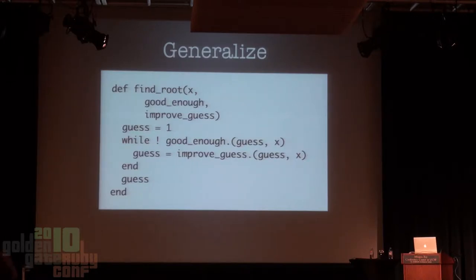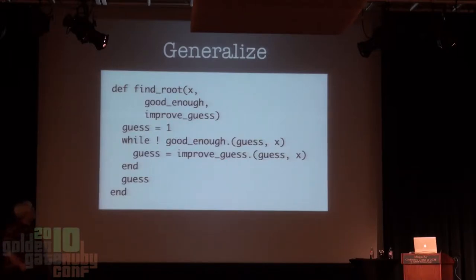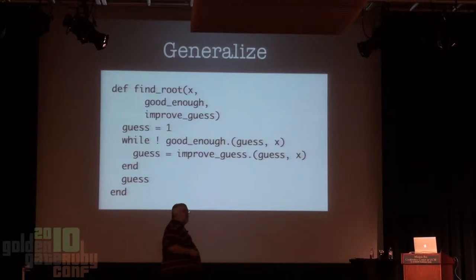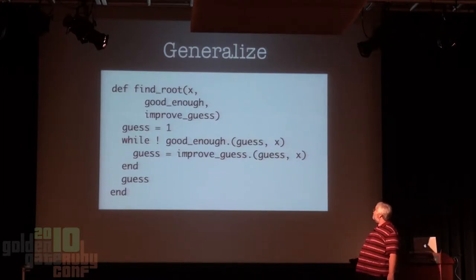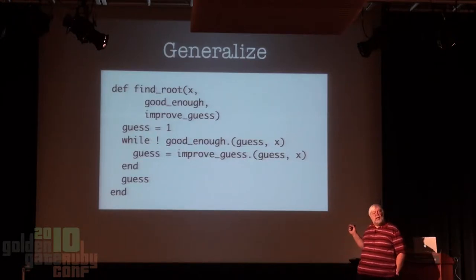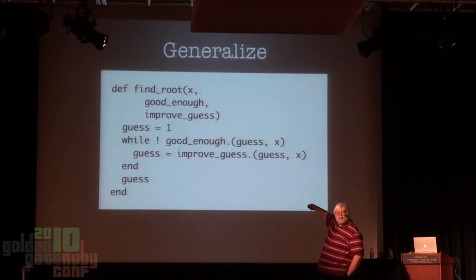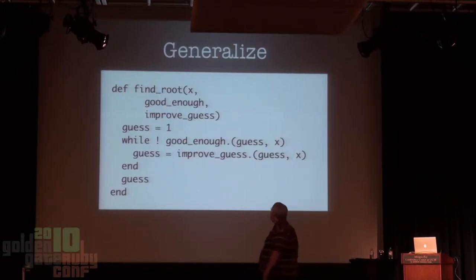We can find the root of anything—not just square roots, but cube roots or any polynomial. Just by plugging in the correct values of good_enough and improve_guess. Let's parameterize this: define find_root as a general root-finding method. It takes a number, and we will pass in good_enough and improve_guess as parameters to this function. We've pulled out the square root nature and made it a general-purpose function. Now we can find any root just by passing in the right values. Since these are now functions, we'll call them with function-calling syntax—this is a Ruby 1.9 idiom.